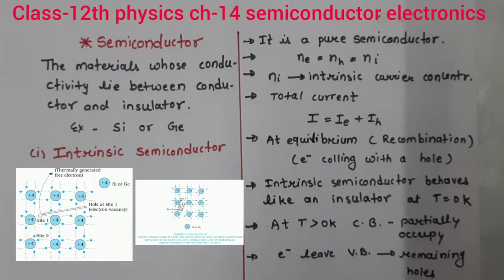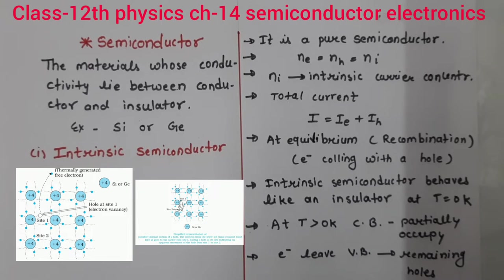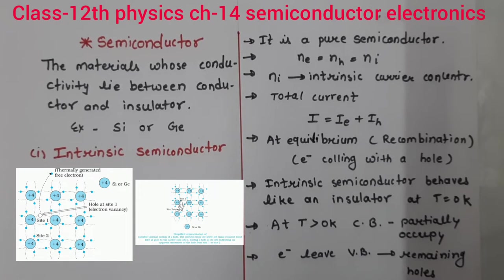Pahle hootay kya hain, hum yeh samajte hain. So basically semiconductors are those materials whose conductivity lies between the conductor and insulator. Generally the semiconductors we use are silicon and germanium.